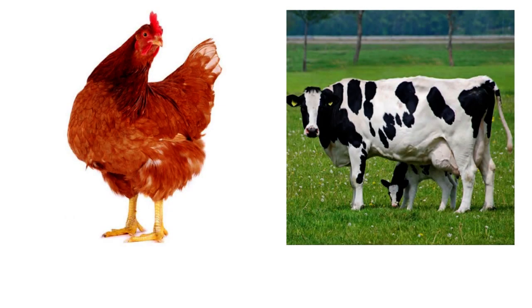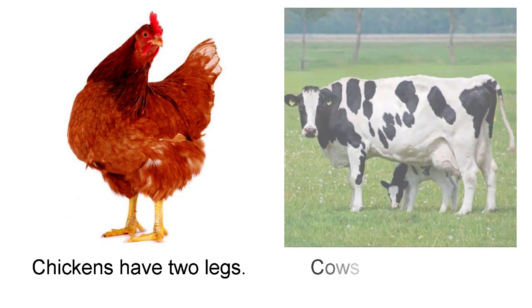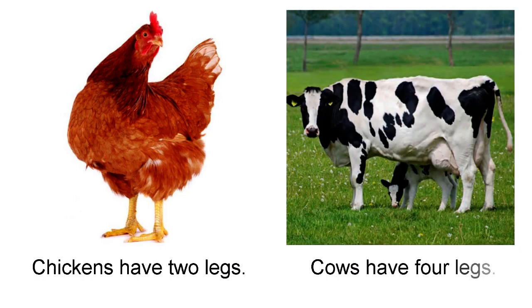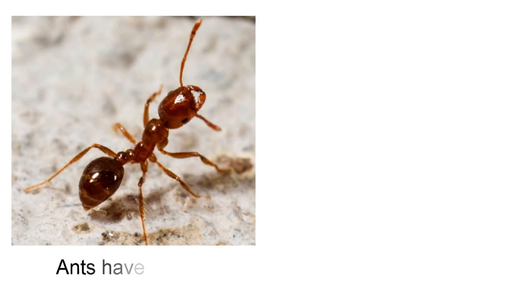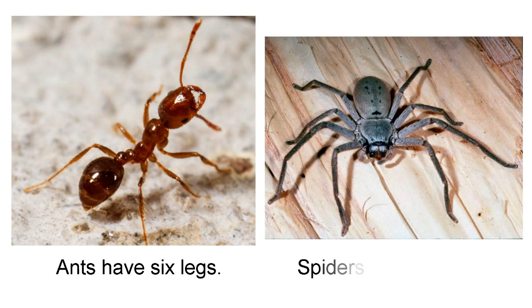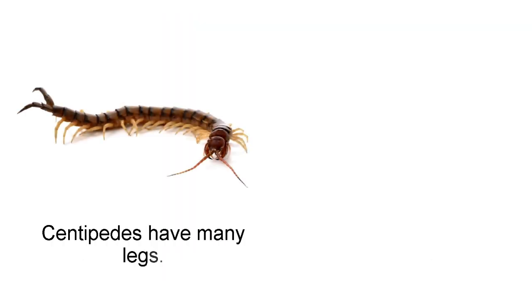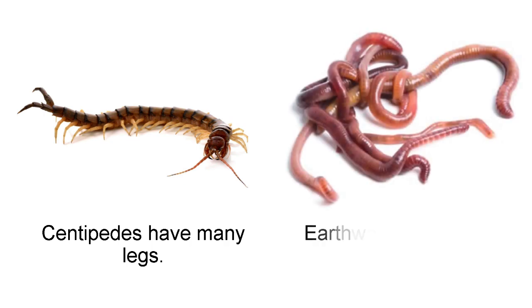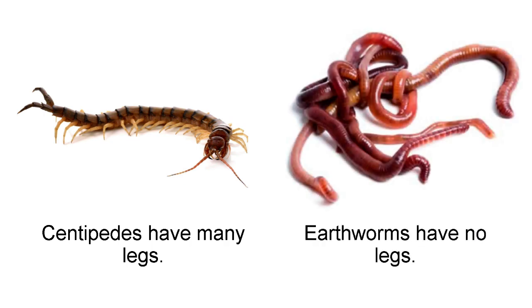Here are some examples. Chickens have two legs. Cows have four legs. Ants have six legs. Spiders have eight legs. Centipedes have many legs. Earthworms have no legs.